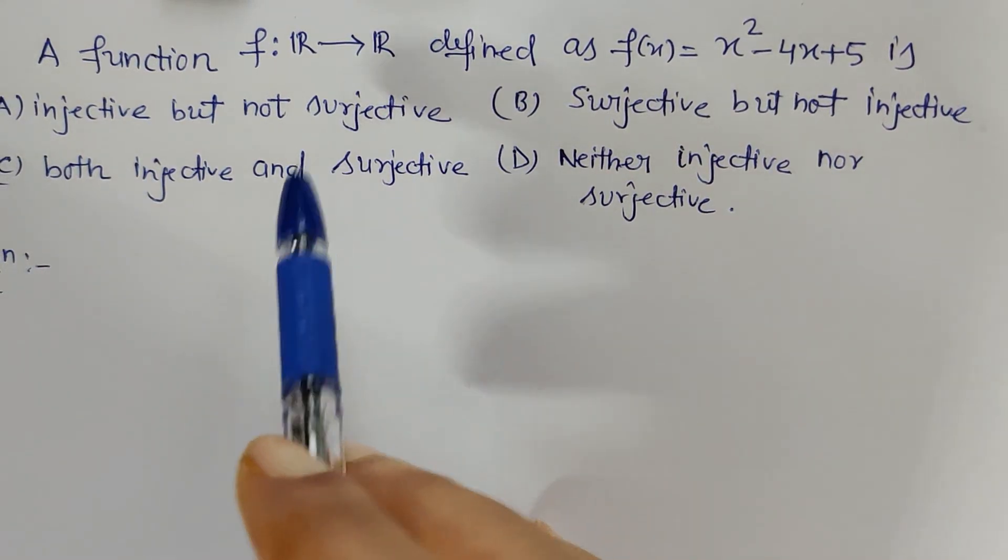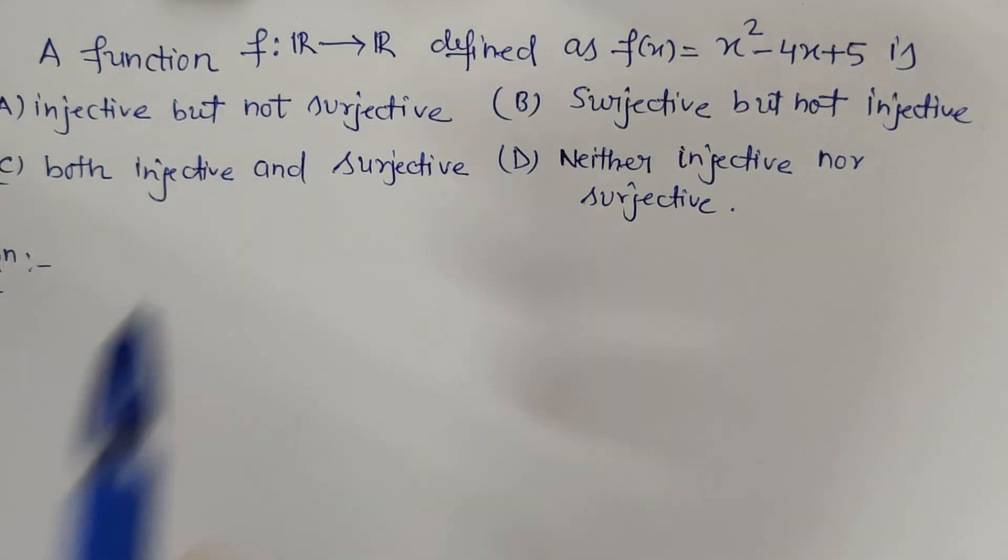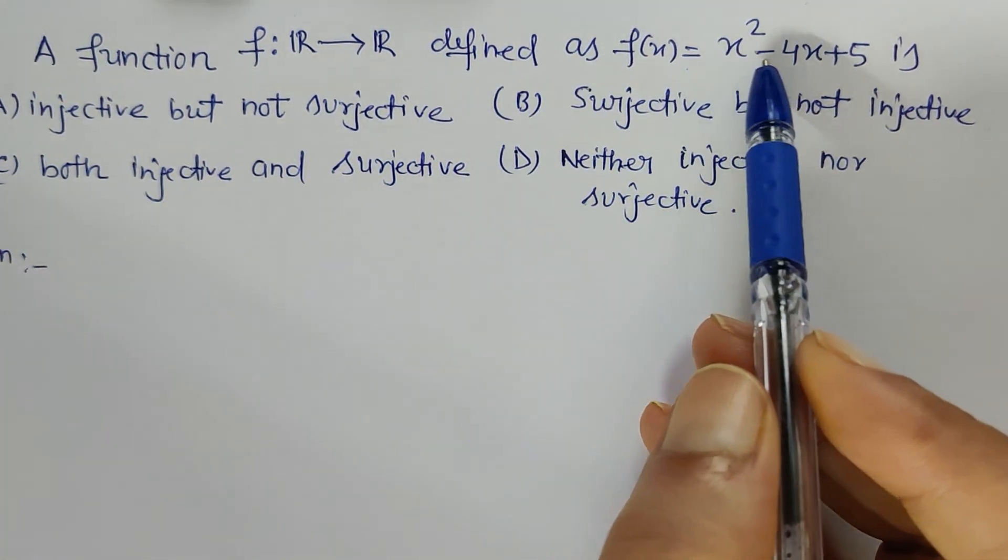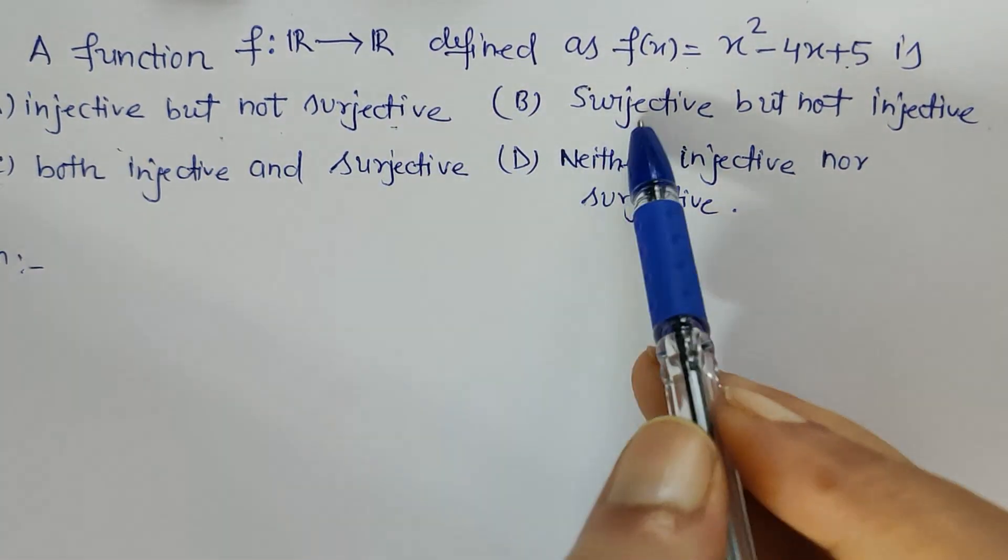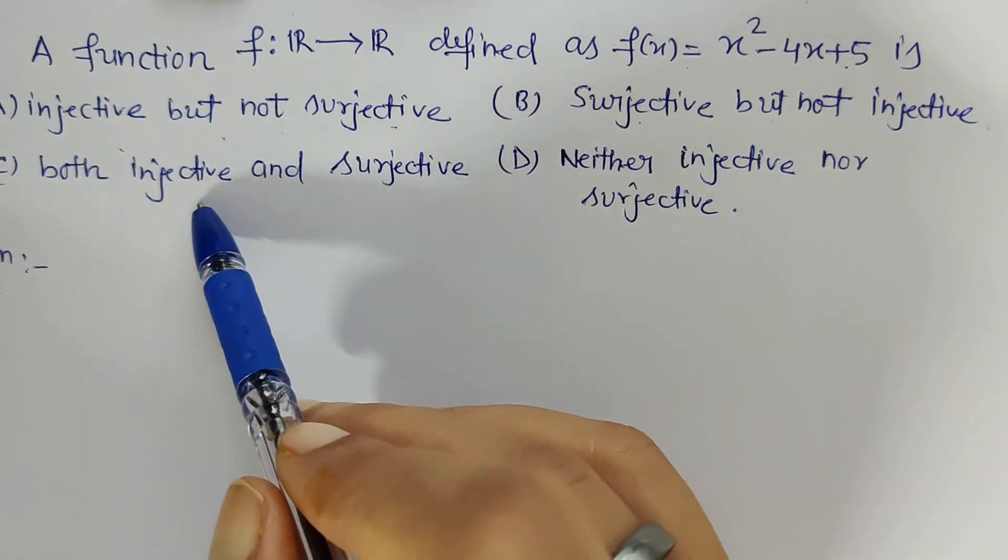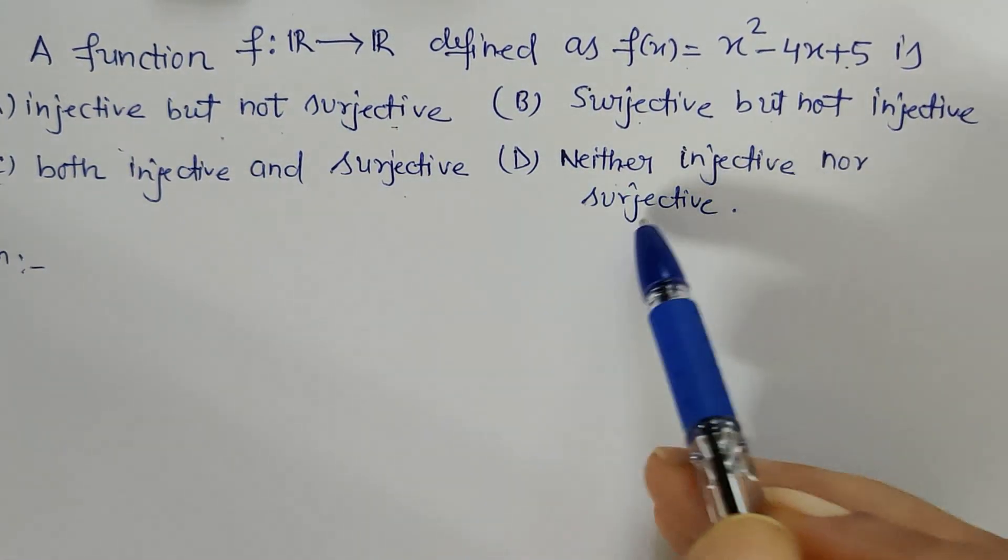Here, if we say a function f from R to R defined as f(x) = x² - 4x + 5 is: (A) injective but not surjective, (B) surjective but not injective, (C) both injective and surjective, (D) neither injective nor surjective.